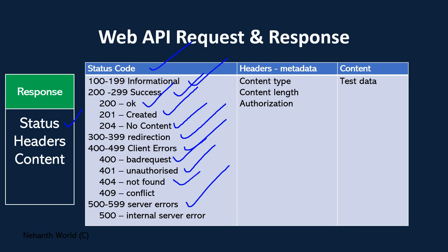404 is something we see on every website — it means the requested resource is not found on the server. 409 is a conflict. The 400 series is for client errors. Coming to the 500 series — 500 is the internal server error. If something goes wrong or fails on the server, it responds back with a 500 server error status code.